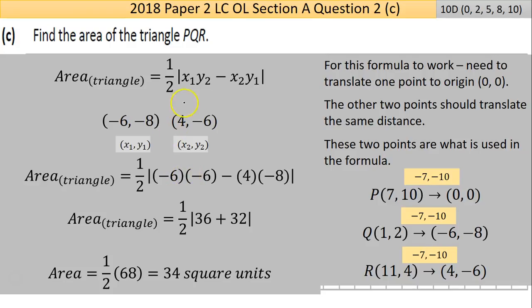The formula here doesn't make it very explicit but it's x₁ times y₂. I've made it more explicit here by using the brackets. I just filled in: instead of x₁ I've put -6, instead of y₂ I've put -6, instead of x₂ I've put the 4, instead of y₁ I've put the -8.